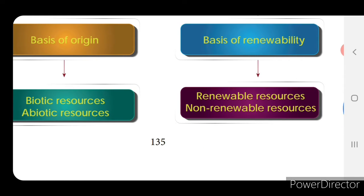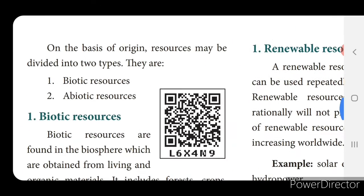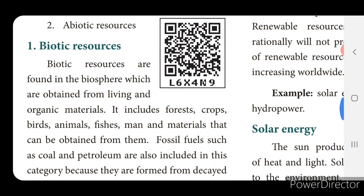On the basis of renewability, resources are divided into renewable resources and non-renewable resources. In this class, we are going to see the classification based on origin — that is biotic resources and abiotic resources. On the basis of origin, resources may be divided into two types: biotic and abiotic.